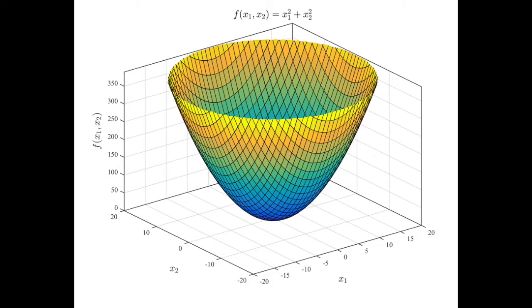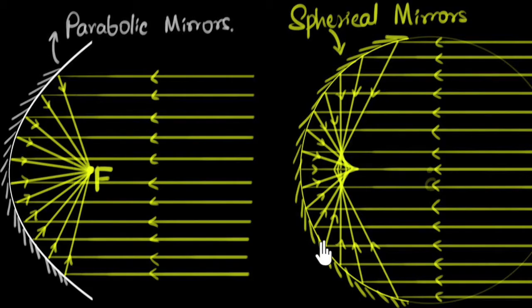Anyway, so a paraboloid is the 3D version of the parabola. It's just a parabola that rotates around the z-axis. Now, if you construct a mirror out of this shape, you'll see that all the rays that come in at a perpendicular are focused to this one point called the focus.